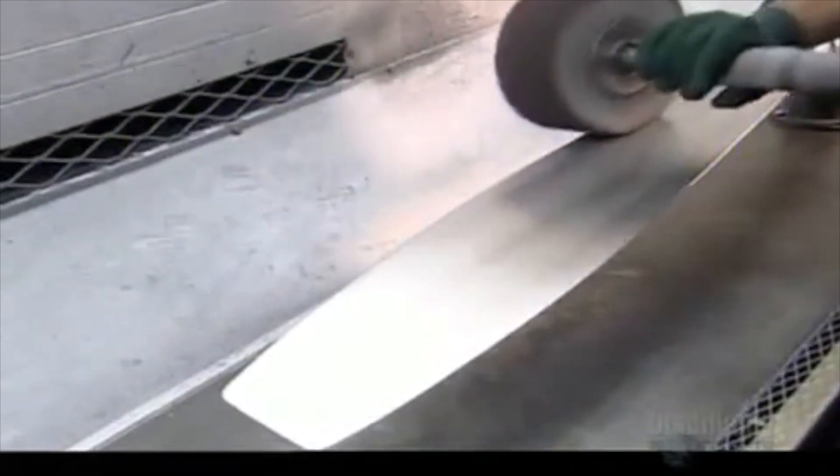Workers use a rotary sander, then a belt sander to grind away the marks the machining process left behind. They buff the metal with a polishing wheel.